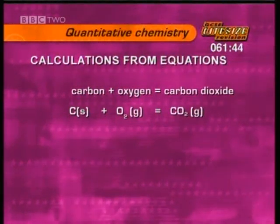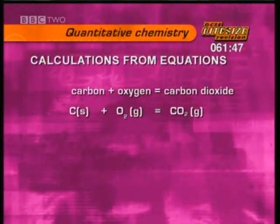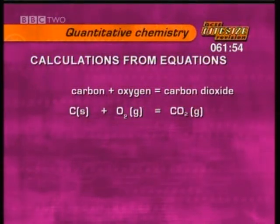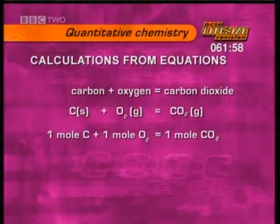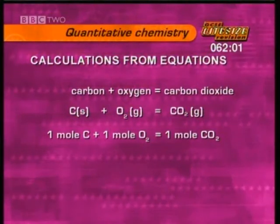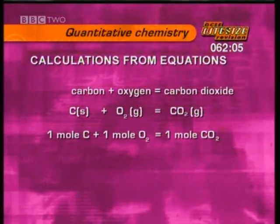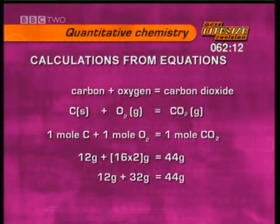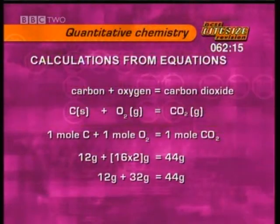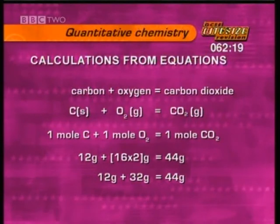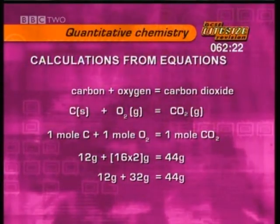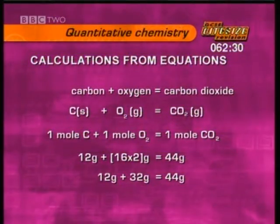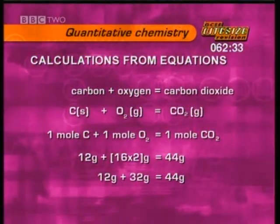The equation C + O₂ → CO₂ tells you that one atom of carbon reacts with one molecule of oxygen to produce one molecule of carbon dioxide, and also that one mole of carbon reacts with one mole of oxygen to produce one mole of carbon dioxide. Using relative atomic masses (carbon = 12, oxygen = 16): 12 grams of carbon plus 32 grams of oxygen produce 44 grams of carbon dioxide. This tells us exactly how much of each reactant is needed to produce a given amount of product.